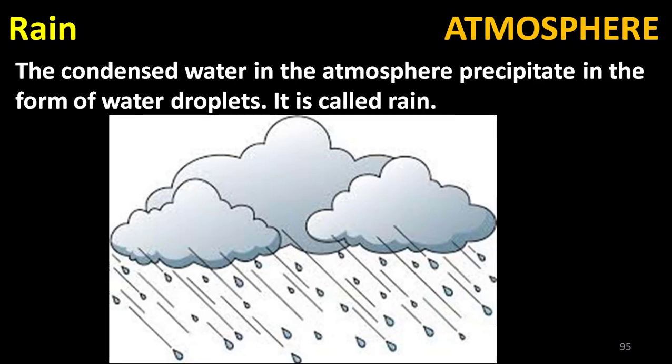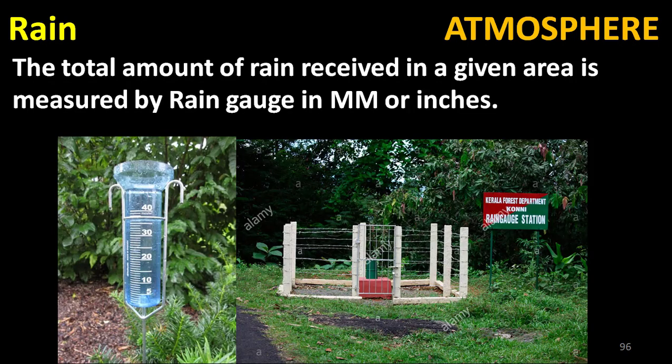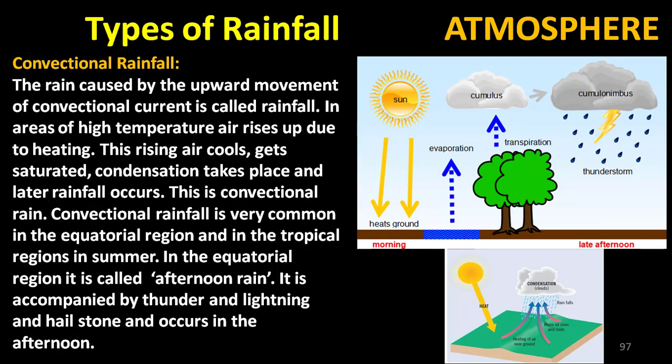The condensed water in the atmosphere precipitates in the form of water droplets — this is called rain. The precipitation in the form of water droplets is called rainfall. The total amount of rain received in a given area is measured by a rain gauge, in millimeters or inches.